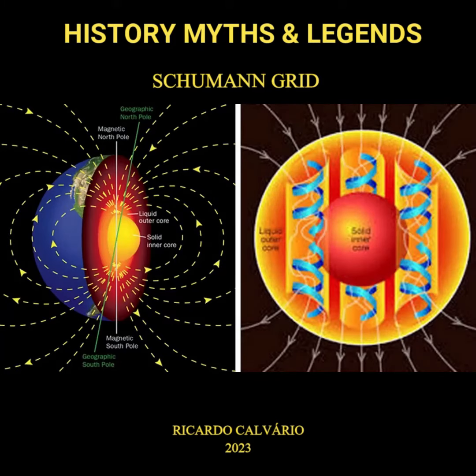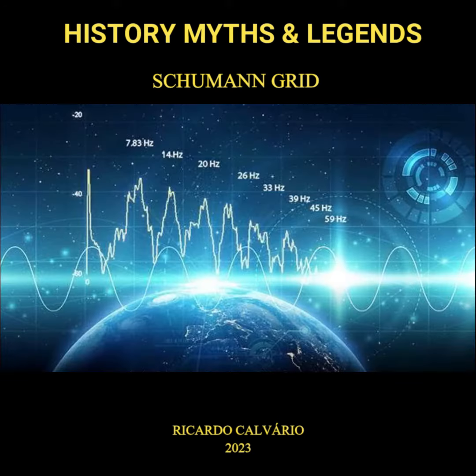Distortions to this frequency can occur from underground waterways, fault lines, underground caverns, mineral deposits, and man-made structures such as roads, railways, underground utilities, tall buildings, or towers.